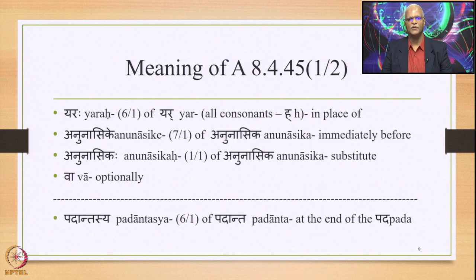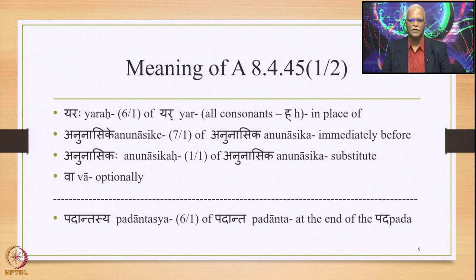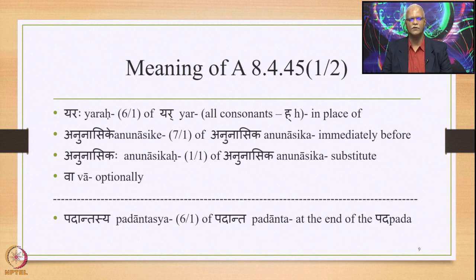There are four Padas in this Sutra. The first one is Yaraha — six-one of Yar — meaning all consonants minus H, so Yaraha means 'in place of Yar.' Anunasike is seven-one of Anunasika, meaning immediately before an Anunasika sound. Anunasikaha is one-one of Anunasika, meaning Anunasika is the substitute. Va is an indeclinable meaning optionally.